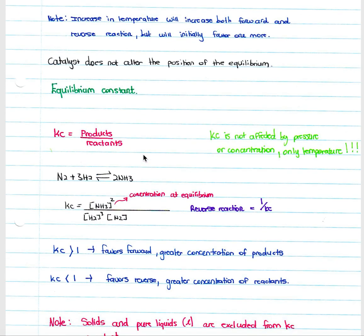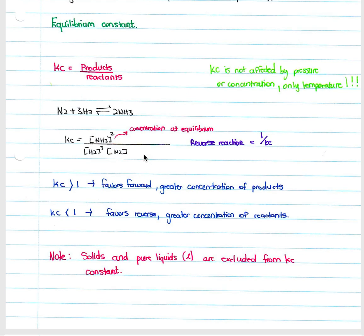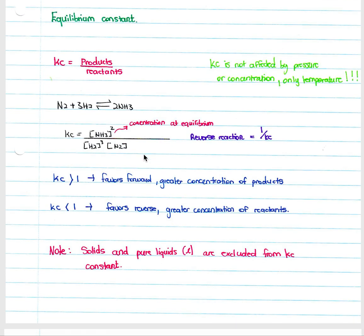Equilibrium constants are used to identify whether a reaction favors the forward or reverse reaction. The equilibrium constant is represented by Kc and equals the concentration of products over the concentration of reactants at equilibrium. You must know that Kc is not affected by pressure or concentration — it is only affected by temperature. So if asked what happens to Kc after a pressure or concentration change, the answer is that there is no change. However, if temperature is increased or decreased, Kc will change.